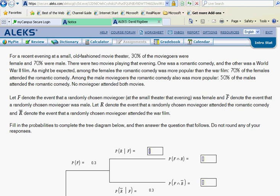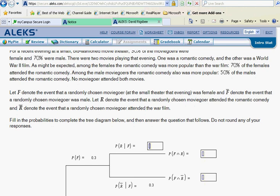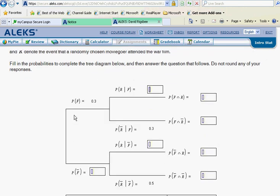So let's read: a recent evening at a small old-time movie theater, 30% of the moviegoers were female and 70% were male. We can kind of see here that we set this up in this diagram.